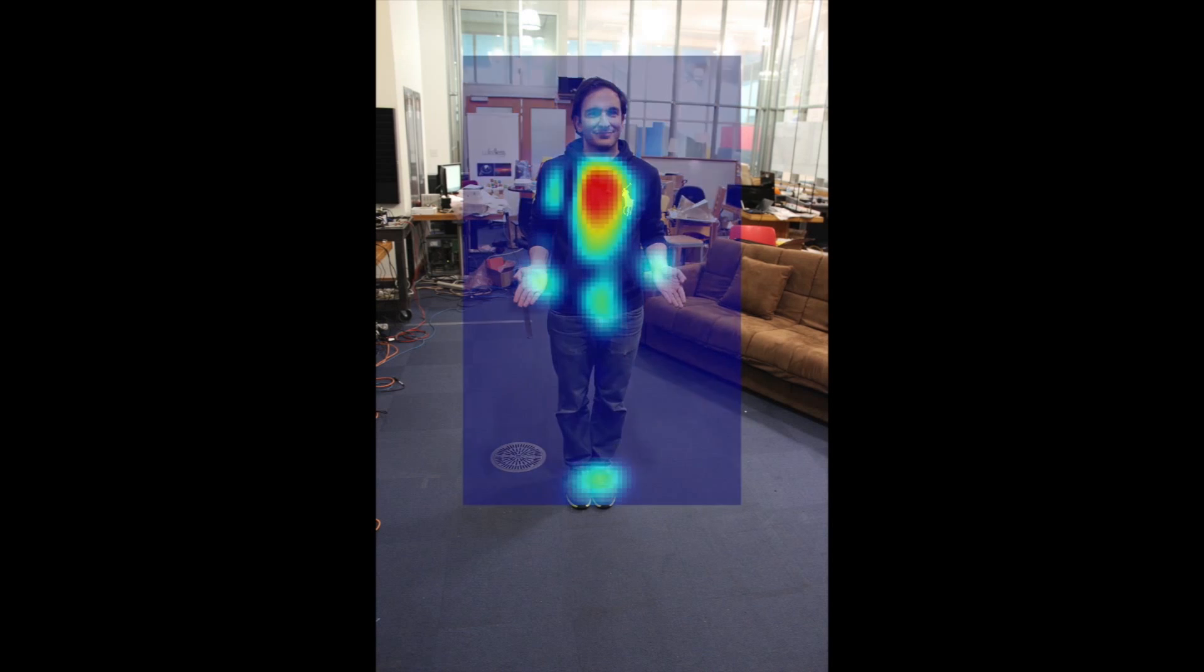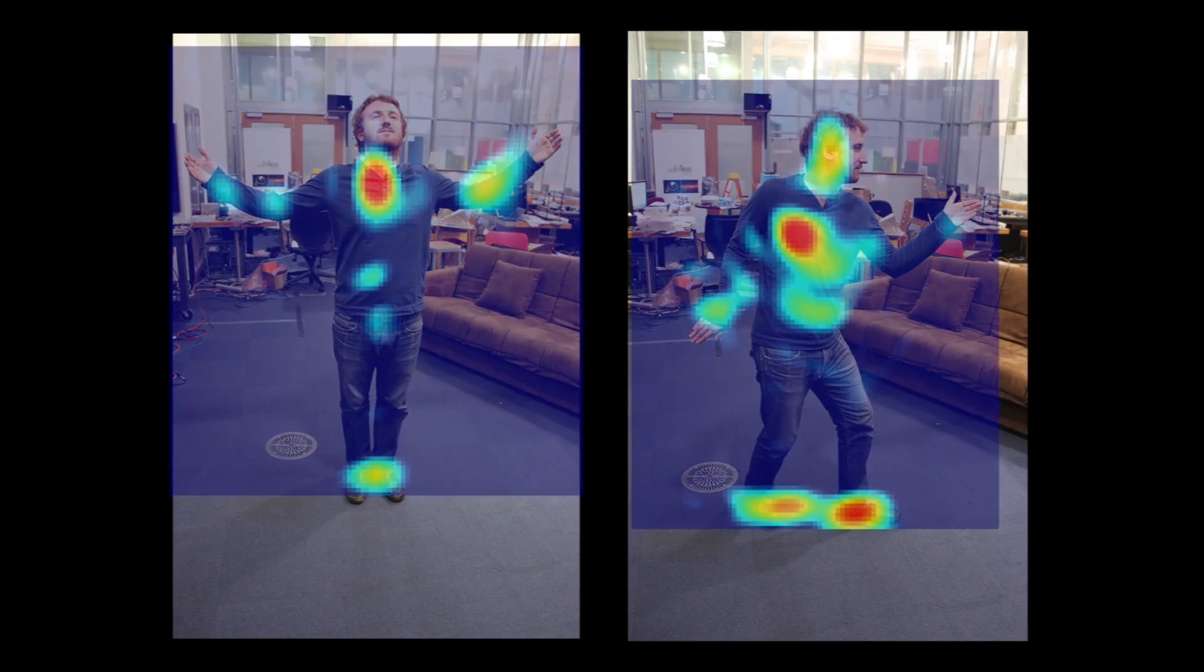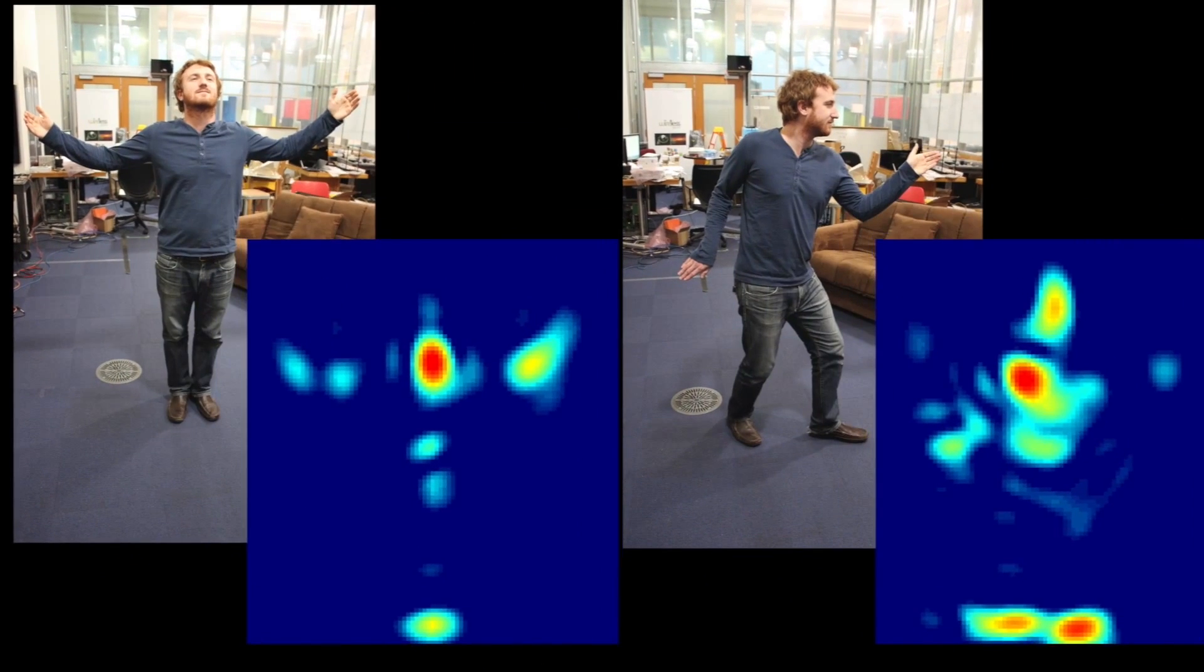The device can also distinguish between certain human postures. If the person stands straight, the output looks like this. While when someone stands in other postures, the device's output reflects his postures.